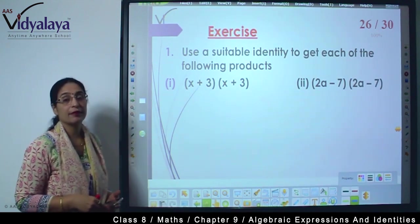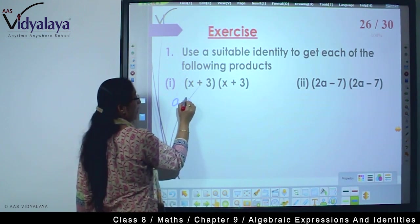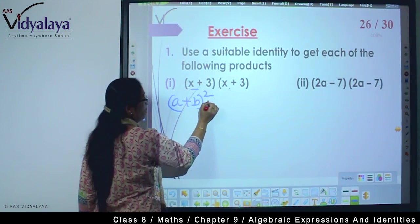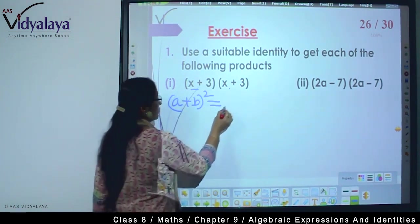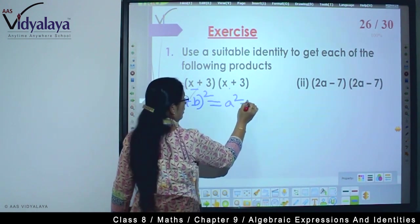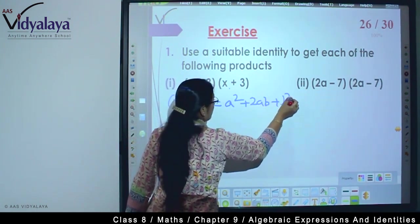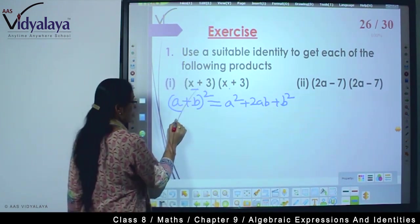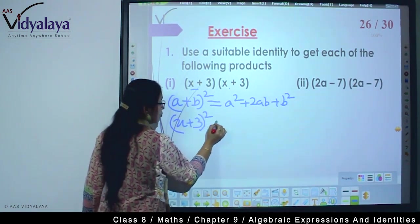So (x+3)(x+3) - which is our identity? Which one is matching? This means this is matching with (a+b)² which is a² + 2ab + b². Clear? So how can we write this way: (x+3)².